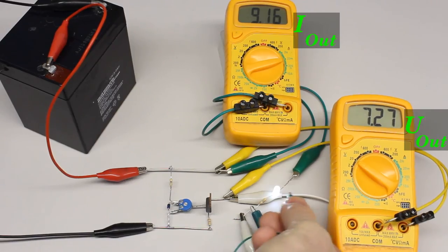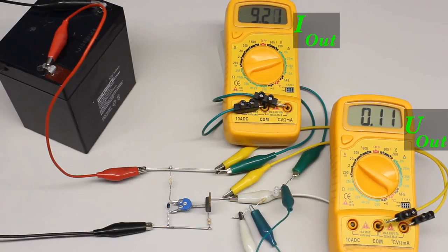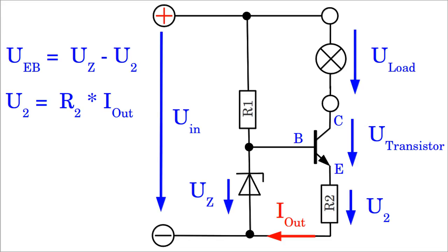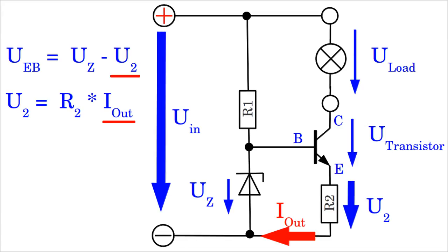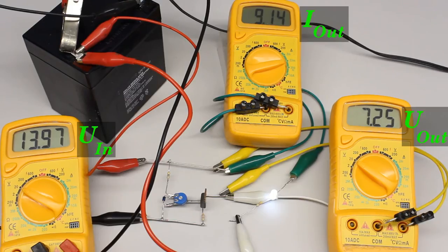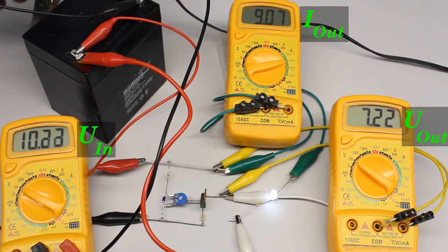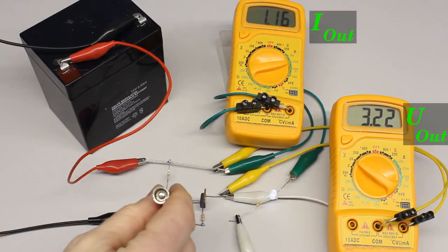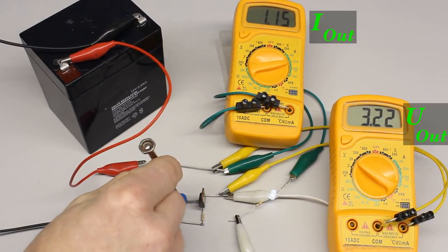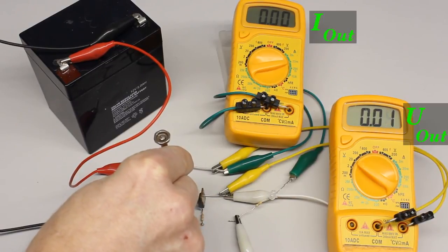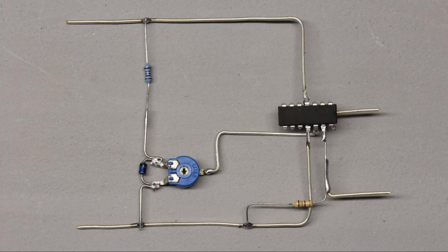Even when short-circuiting the output clamps — which equals a load with an extreme low resistance — the current is increasing just slightly. An increasing input voltage would also cause an increasing current through the load, which is also counterbalanced by an increasing resistance of the transistor. Likewise, a falling input voltage is balanced by the regulator circuit. With the help of a potentiometer switched in parallel to the Zener diode, the output current can be adjusted continuously. By using an operational amplifier, the accuracy of the regulator circuit can be improved.